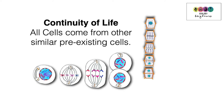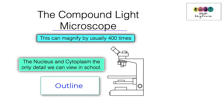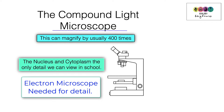The microscope that you use in school is known as the compound light microscope. It gives you a good outline of the cell and can magnify by up to about 400 times. After that you lose clarity or resolution — you need an electron microscope to see the detailed structure of the cell.